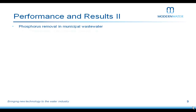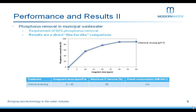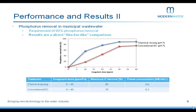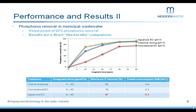Our second case study is phosphorus removal in municipal wastewater, with a target of 90% phosphorus removal. These results are direct like-for-like comparisons — all coagulant doses were equal across ferric chloride, conventional EC, and Agwacure EC. At optimum pH, chemical dosing achieved the 90% target. Conventional EC dropped in performance, only reaching 76% maximum phosphorus removal. Agwacure EC surpassed both methods, achieving 97% removal, and we also reduced power consumption by half.